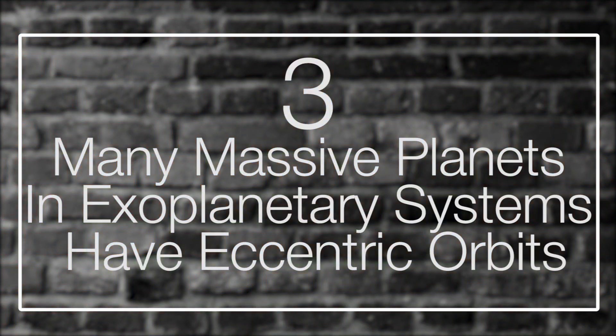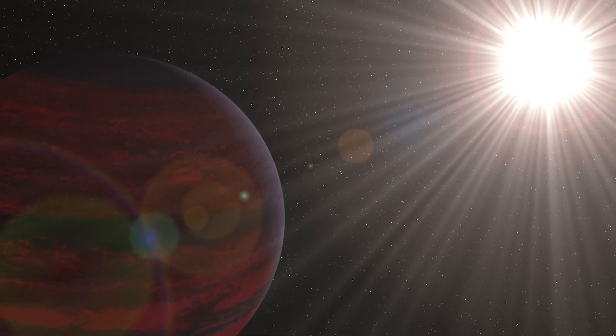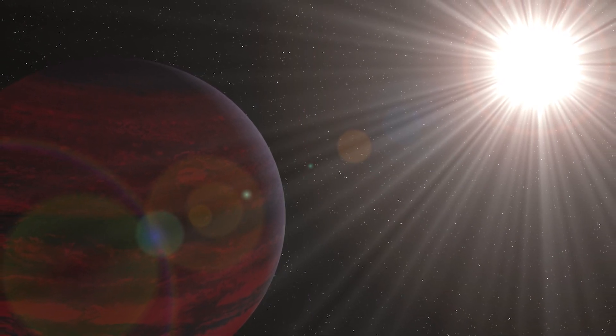3. Many Massive Planets in Exoplanetary Systems Have Eccentric Orbits. We already know that hot Jupiters make up a large number of exoplanets in the Milky Way, and we know that our solar system is lacking them. But what about their orbits? While the orbital shape in exoplanetary systems tends to be largely circular, this is not true when it comes to hot Jupiters. In fact, according to some research, gas giants in general seem to have more eccentric orbits in other systems.